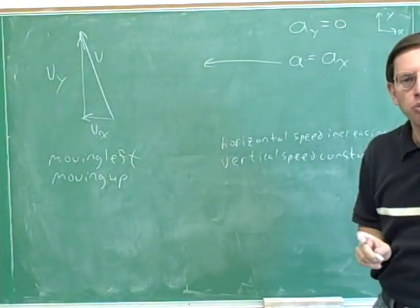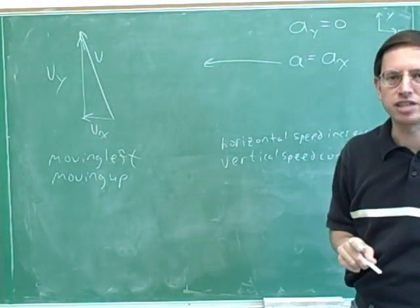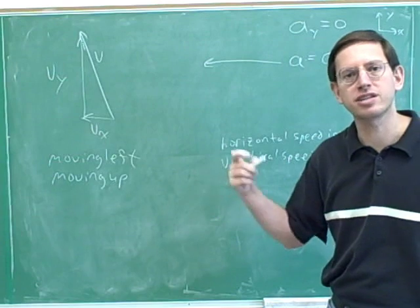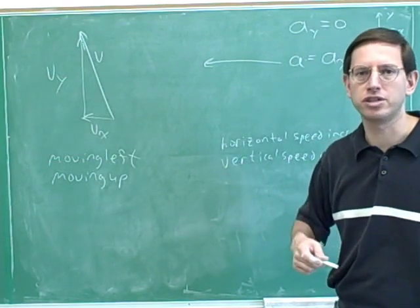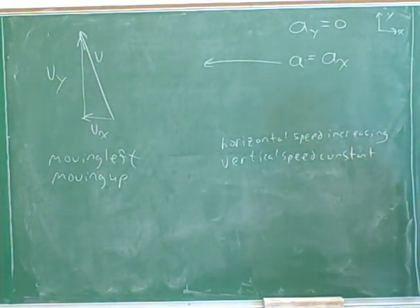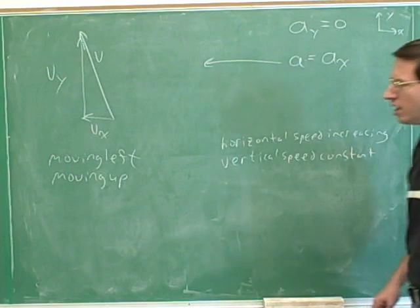How would you know when you're not moving? It's the velocity that tells you how you're moving. It's when the velocity is zero that you're not moving. When the acceleration is zero, it just means that your speed isn't changing. So we're moving to the left with an increasing horizontal speed and moving up with a constant vertical speed.